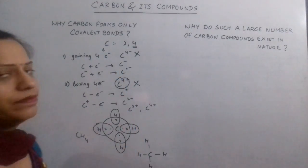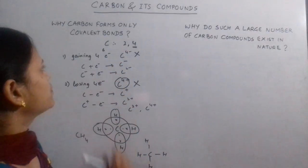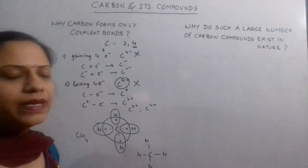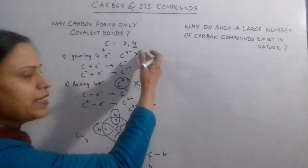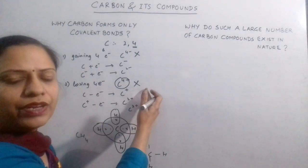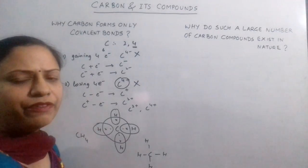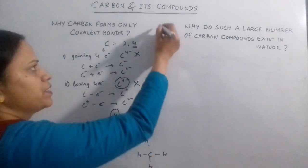So the first question should be clear now. Why carbon forms only covalent bonds? Because carbon doesn't form C4 negative, it doesn't form C4 positive. The only possibility left for carbon to be stable is by sharing electrons. That is why carbon forms only covalent bonds.